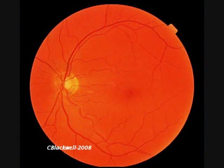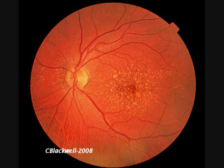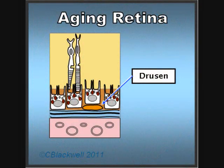Here is a normal retina in middle age — note the nice, even orange color. In an older person's retina, you can see little yellow or white dots in the center. These are called drusen. They are deposits of waste material underneath the retina. Deposits of waste material under the RPE cells are the drusen you saw in the last picture. These are the visible hallmark of an aging retina.